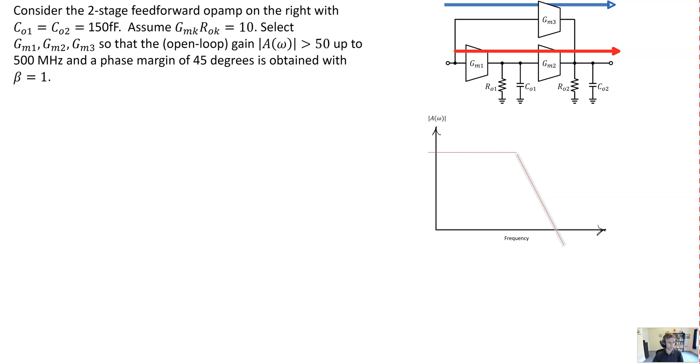The blue path, on the other hand, is a first order path. That's our feedforward path through GM3. And that is going to have a lower gain since there's only one gain stage in there. But it is going to roll off at only 20 dB per decade. And so that's going to introduce this lead compensating zero into the response.